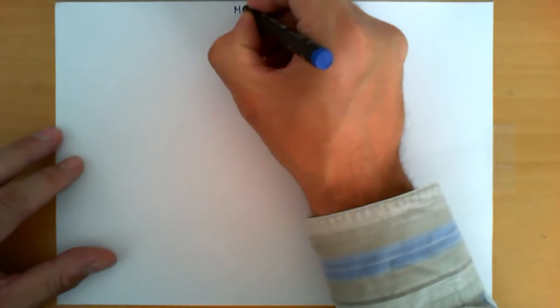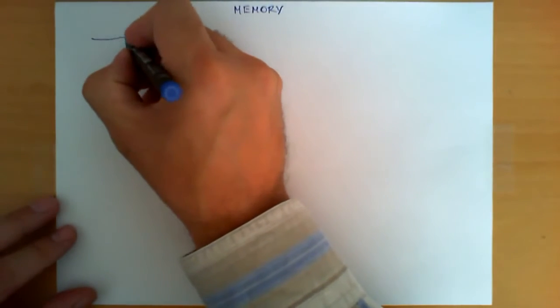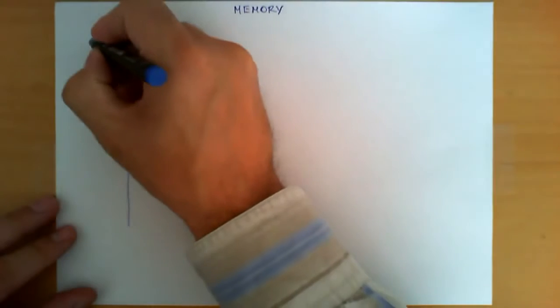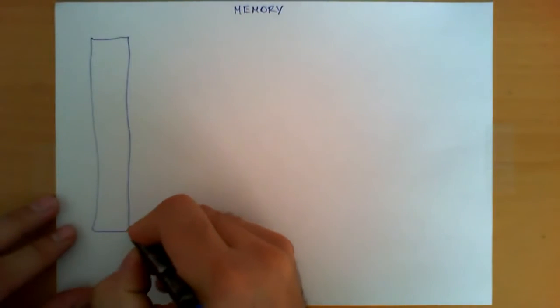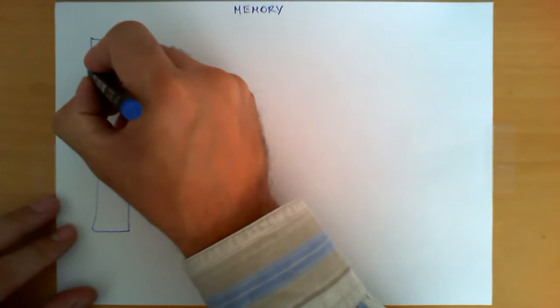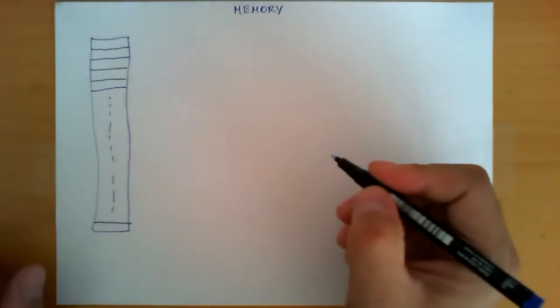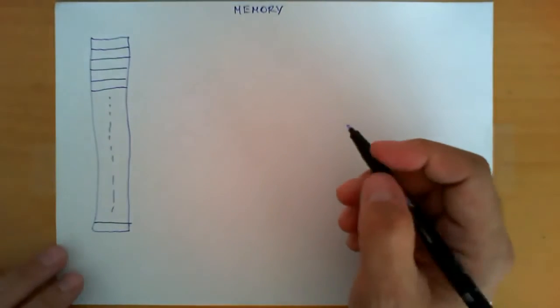In this video we're going to explain how memory works in a computer system. Basically, the memory in a computer system can be seen as a huge table which is made out of what we call little cells. It's basically a very large table with a typically very large number of these cells. Now this table has specific properties.